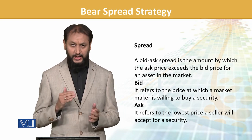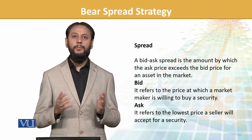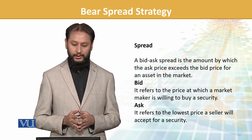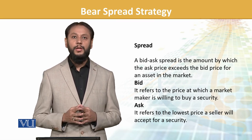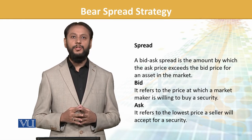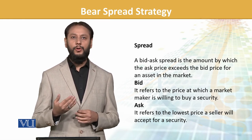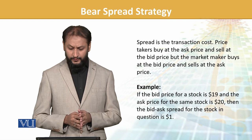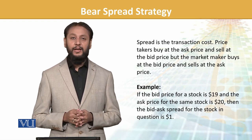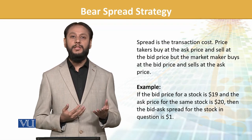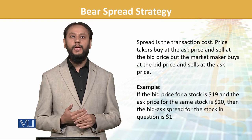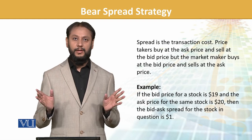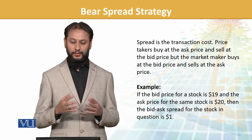Spread is the difference between bid and ask — the difference between the seller and the buyer. This exists wherever there is a buying and selling difference, such as with banks and brokers. For example, if you want to buy dollars the rate is different from when you sell dollars. If the bid of a stock is 19 and the ask is 20, that difference of 1 is the spread. When they match, the transaction is locked.